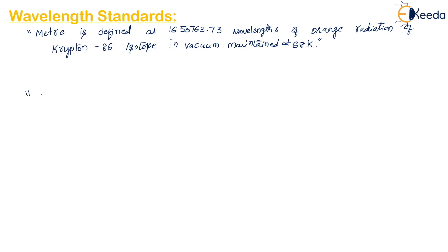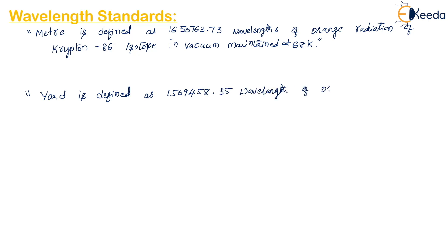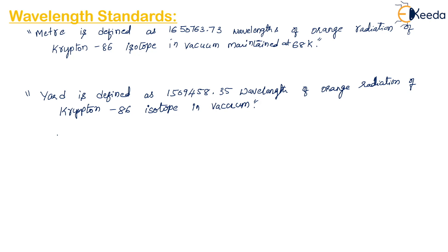Next, how is the yard defined in the wavelength standard? The yard is defined as 1,594,058.38 wavelengths of orange radiation in vacuum of the krypton-86 isotope. The yard may also be defined as 0.9144 meters.